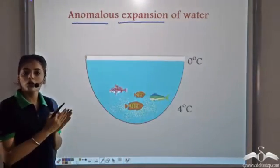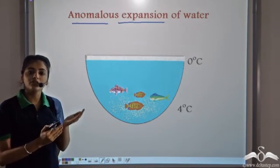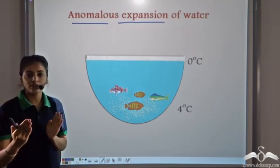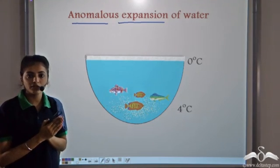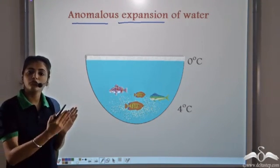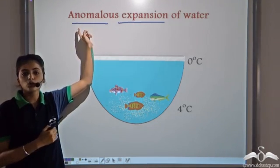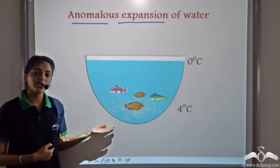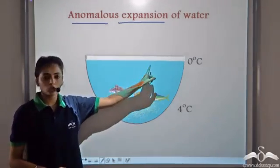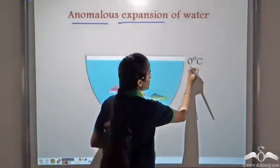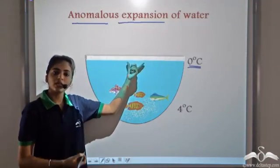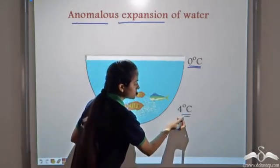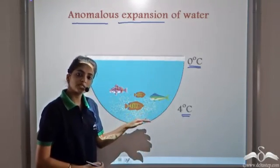Anomalous means unusual or abnormal. So unlike other liquids, the density variation of water is different. It first shows greater density as we cool it from a higher temperature to 4 degree Celsius — that is the normal behaviour. But beyond 4 degree Celsius, it shows an abnormal expansion. This is known as anomalous expansion of water, and it enables marine life to survive in colder regions. Since ice has lesser density compared to water, ice floats on water, and water at 4 degree Celsius, having maximum density, sinks to the bottom.